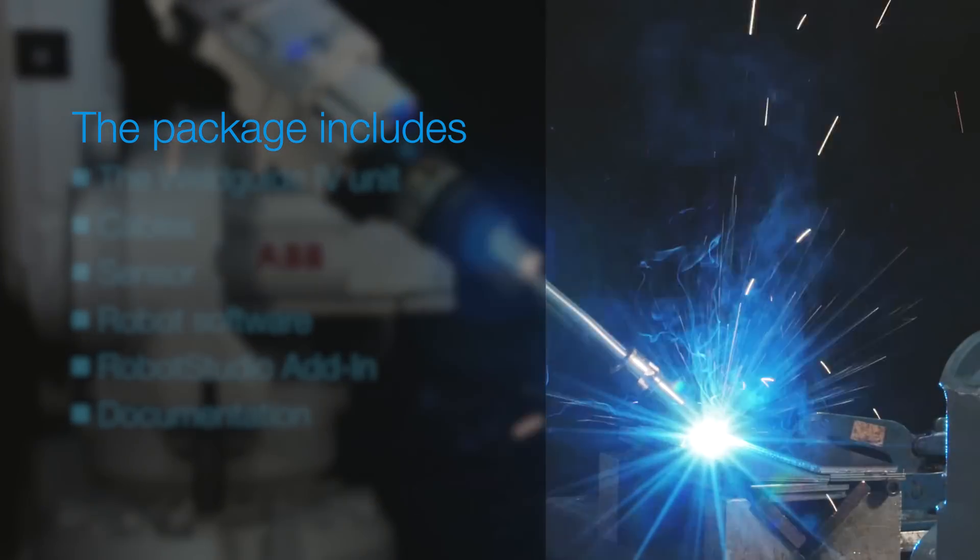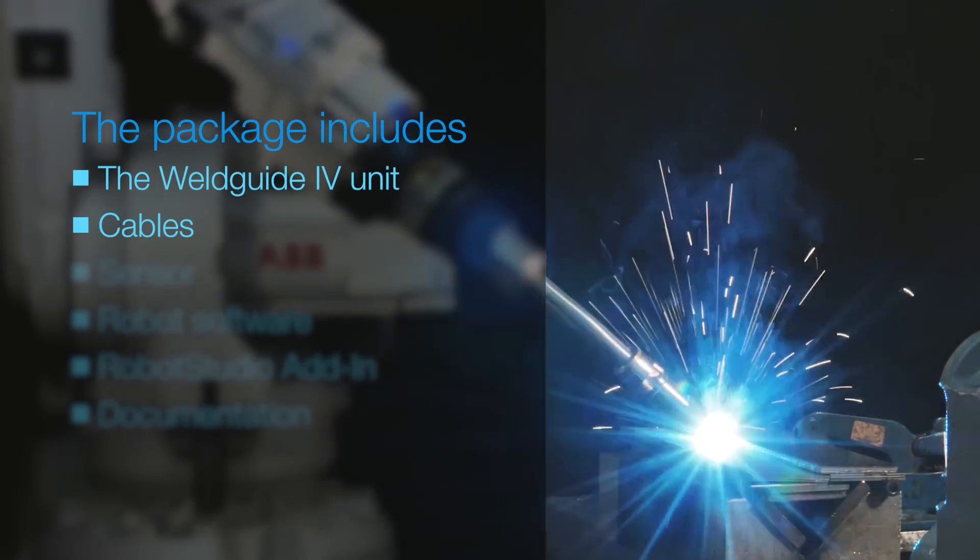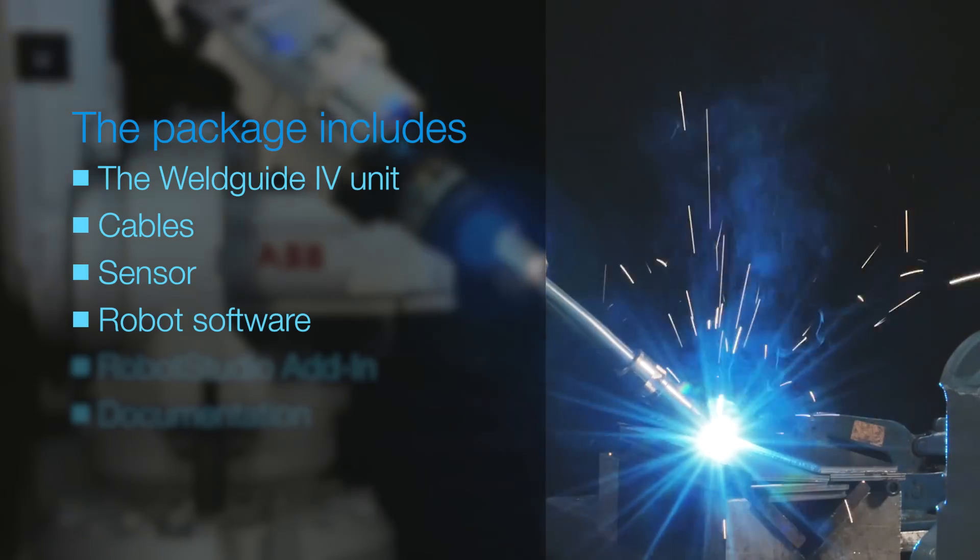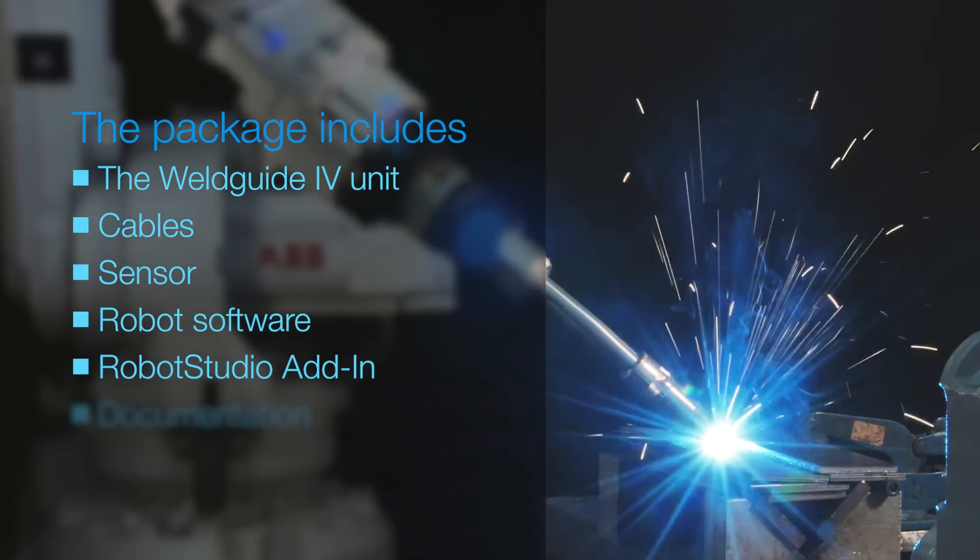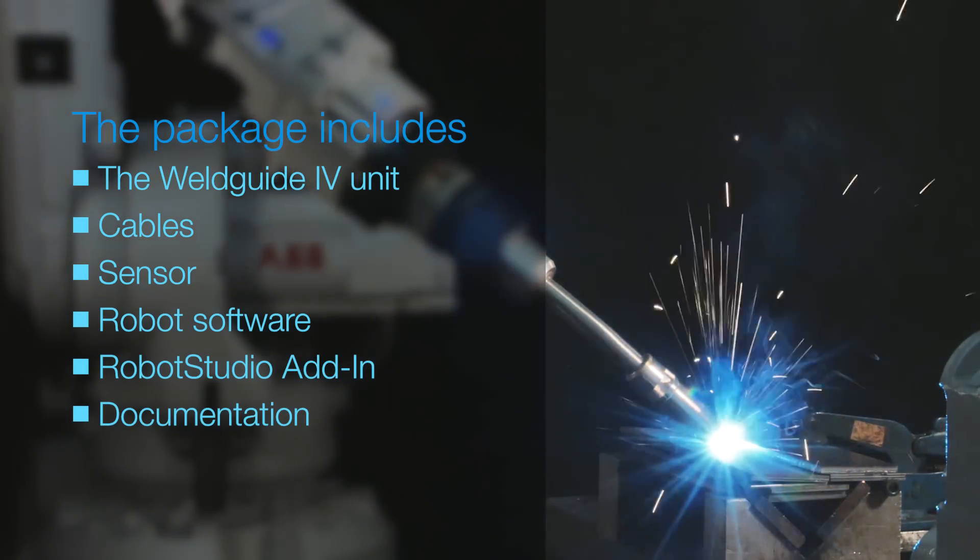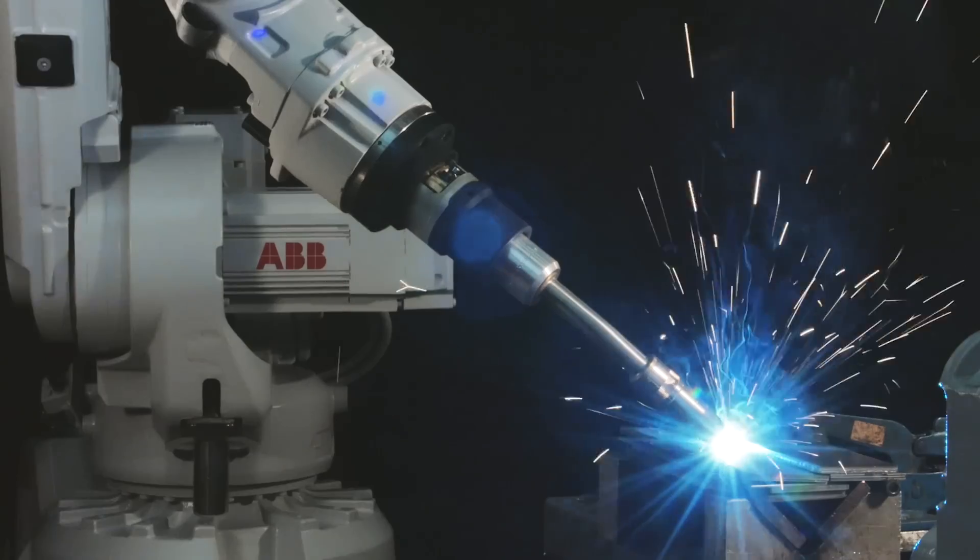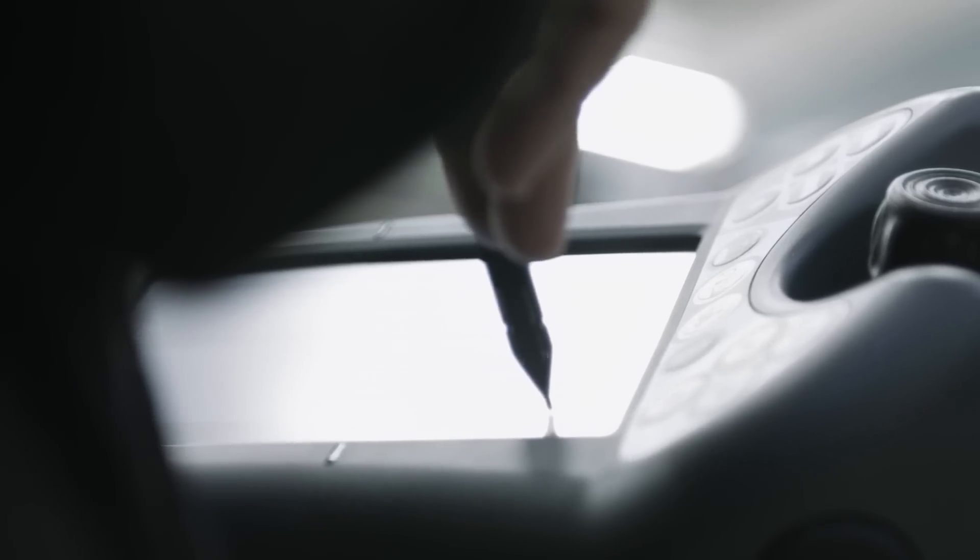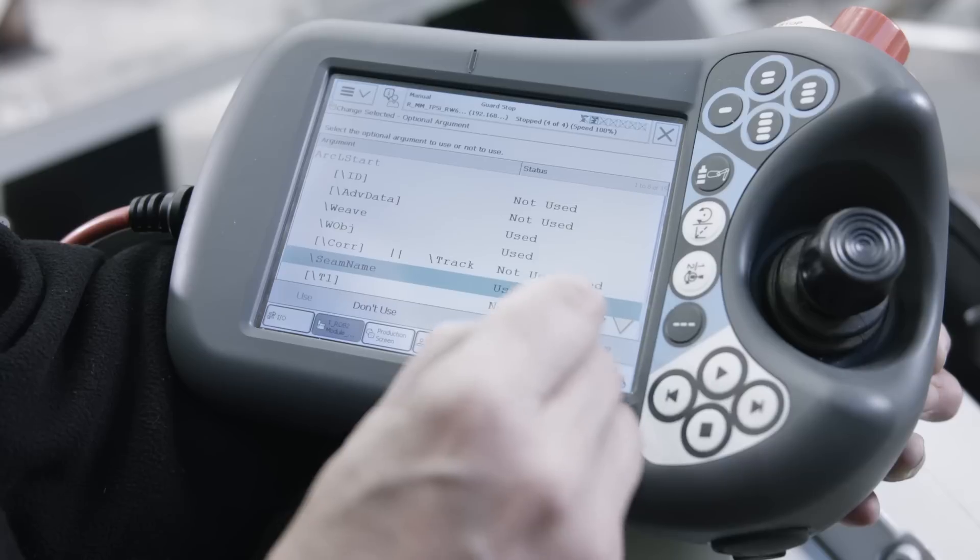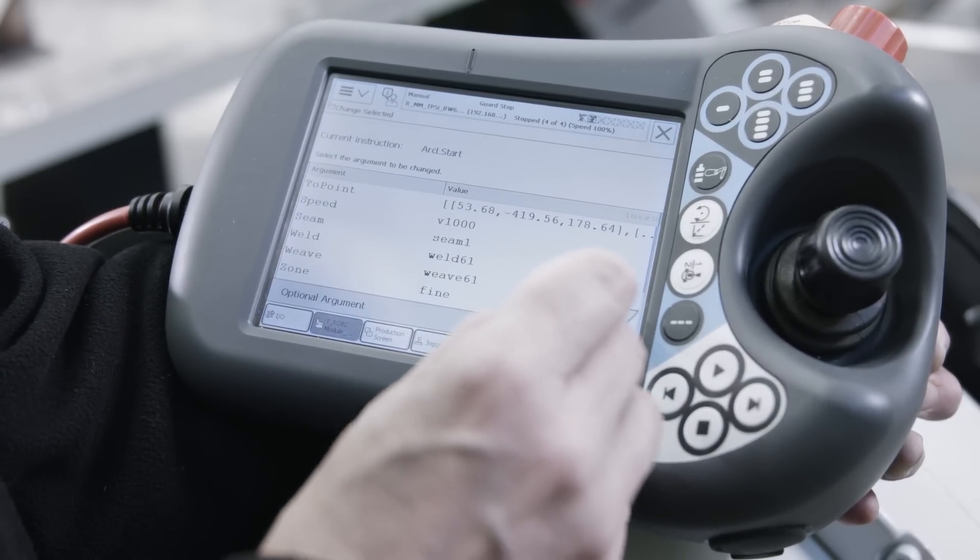The package includes the WeldGuide 4 unit, cables, sensor, robot software, RobotStudio add-in, and documentation. The WeldGuide 4 unit is seamlessly integrated into the IRC5 robot controller for enhanced reliability and ease of use.